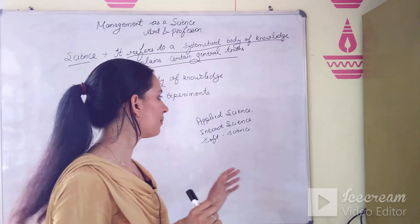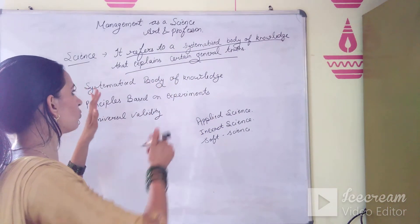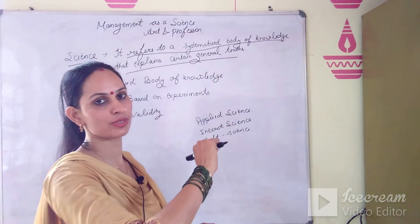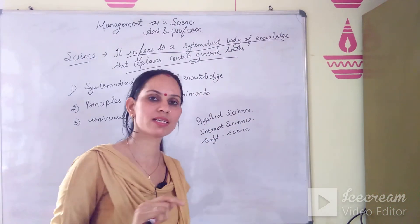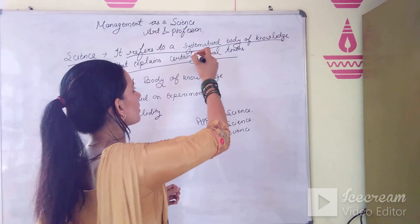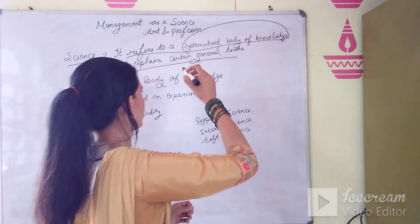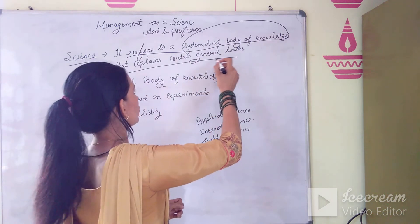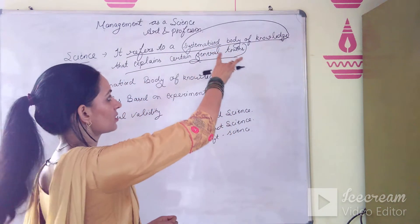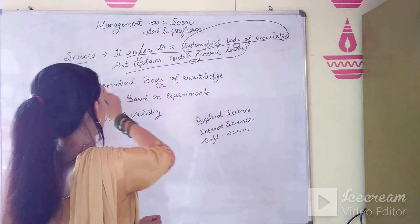There are three characteristics of science. If you have the definition, you don't necessarily have to look for separate features — they are embedded in the definition. The first characteristic visible in the definition is a systematized body of knowledge. The second is certain general truths.